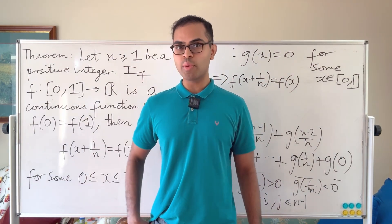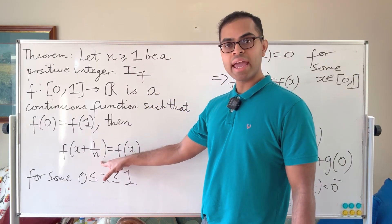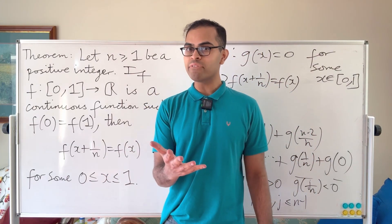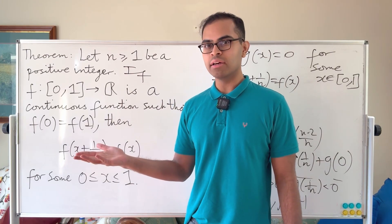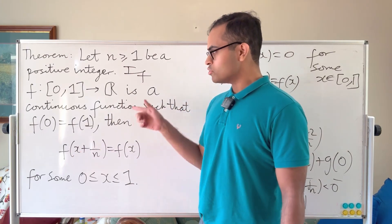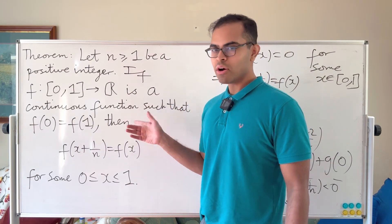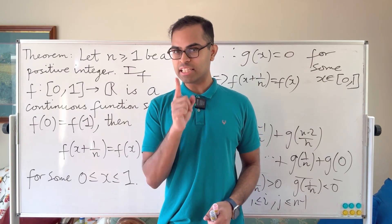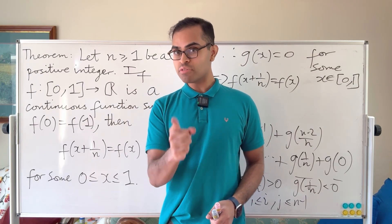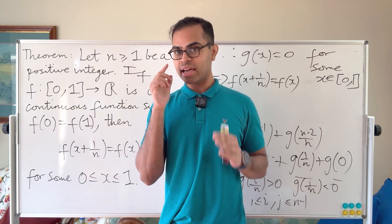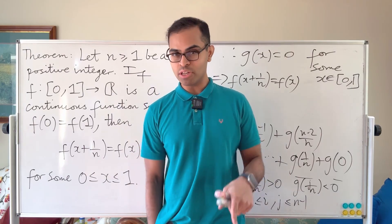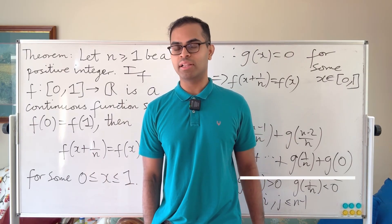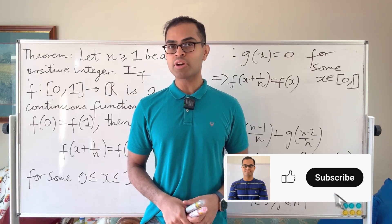Here's a challenge: suppose instead of 1/n we replaced it with a number like 2/5 or 2/3. Is it always true that the conclusion is satisfied, or can you find a counterexample? Drop a comment below — I'd love to see it. I'm going to do a follow-up video on this, and I'd love to hear your thoughts before I do.